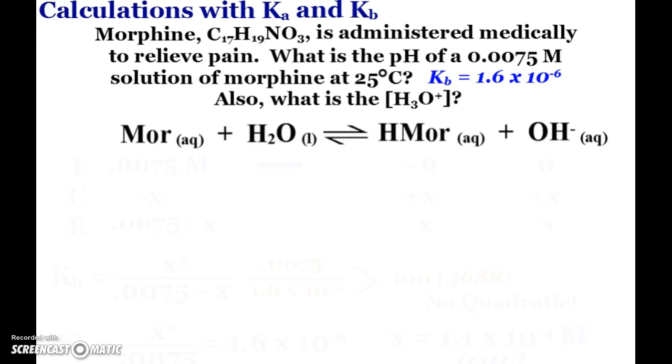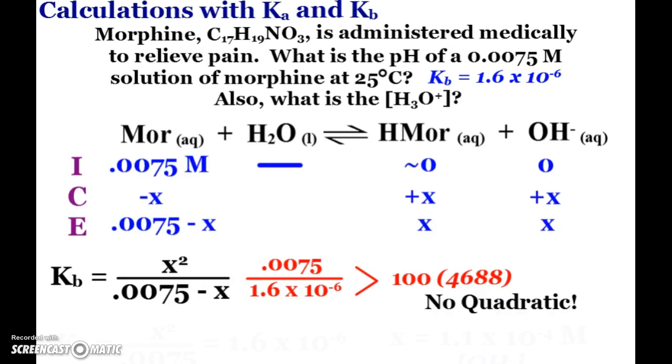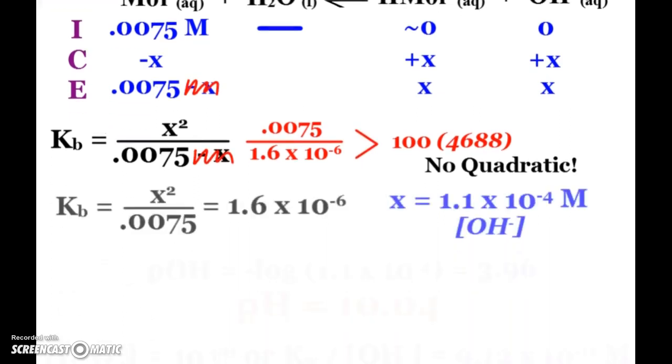Here's one more with our base. Morphine. A lot of our bases end in I-N-E. They're amines with a nitrogen. And of course, you may have heard of that administered medically to relieve pain. I want to know the pH of a 0.0075 molar solution of morphine at my magic 25 degrees Celsius. I'm given the KB. And then I also want to know the hydronium. This is what your ice table should have looked like. And just checking again, we don't have to use the quadratic, which of course happily gets rid of the minus X. And now we just go into plug-chug mode. My KB is equal to X squared over 0.0075. My X is equal to 1.1 times 10 to the negative fourth.